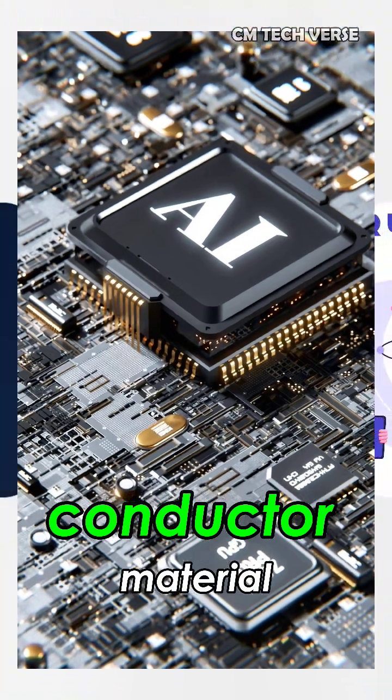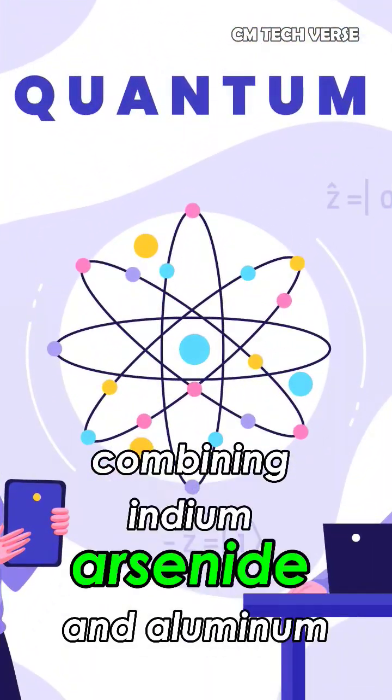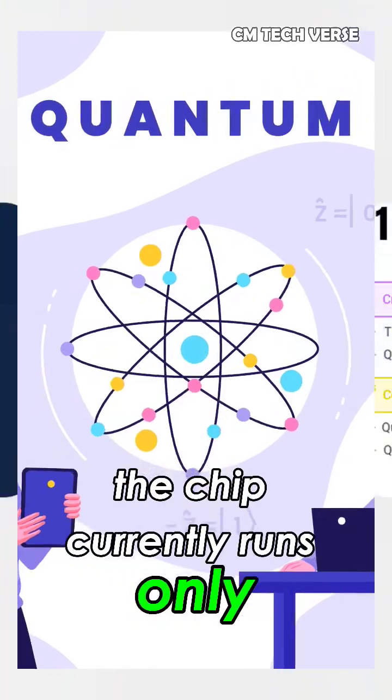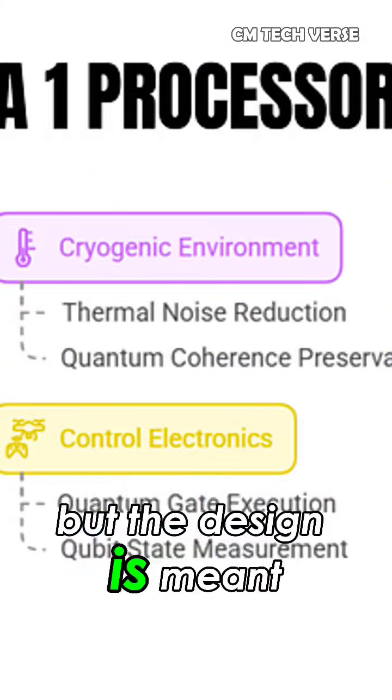Built from a new topo-conductor material combining indium arsenide and aluminum, the chip currently runs only a few qubits, but the design is meant to scale.